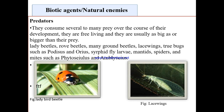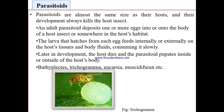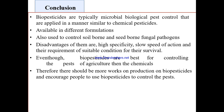Biotic agents like predators consume several to many prey over the course of their development. Examples include lady beetles, ground beetles, lacewings, true bugs, and spiders. Parasitoids are almost always the same size as their host and always kill the host insect. An adult parasitoid deposits one or more eggs into the body of the host insect; the larva feeds internally or externally on host tissues and body fluids, and the host eventually dies while the parasitoid pupates inside or outside the host body. Examples include Trichogramma and Cotesia.